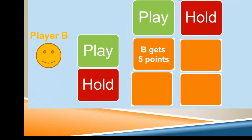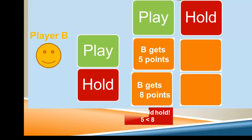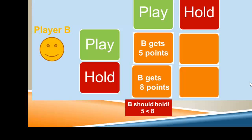So if they both play, B will get five points. But if when A plays, B holds their card, B will get eight points. So what should B do? Well, B should hold the card because the number eight is greater than the number five.